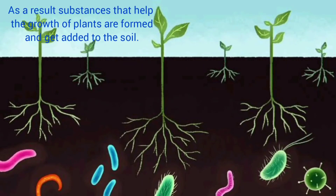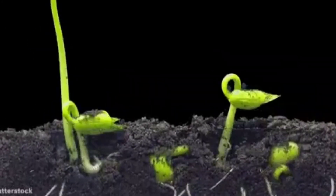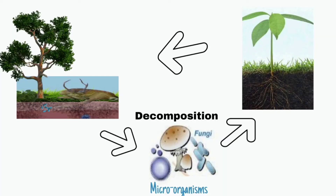As a result, substances are formed and get added to the soil. Plants use these substances in the soil for their growth. When plants and animals die, the decomposition of their remains adds these substances to the soil once again, and this cycle continues forever. Aur yeh chakra hamesha chalta rehta hai. This is an important cycle in the environment.